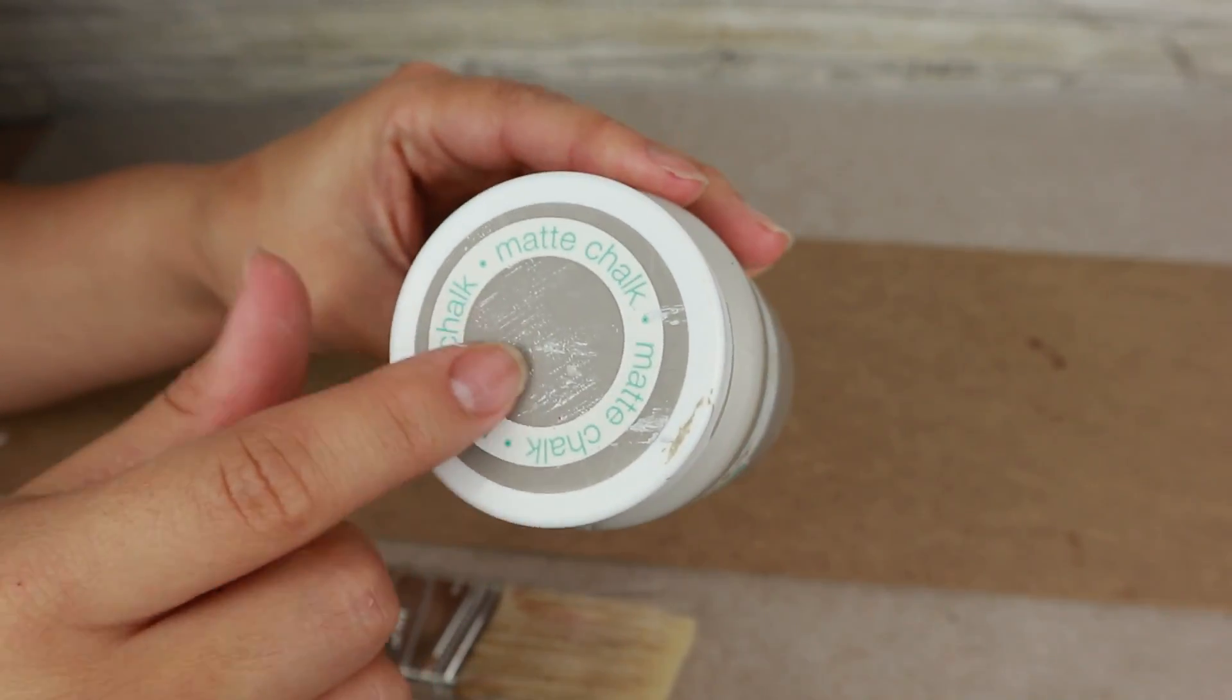Next, I'm going to paint my sign with my DecoArt chalk paint in mineral color. This is one of my favorite colors because it is very neutral and combines with everything. I will be giving it two paint coats on the front and the back side of my sign to cover everything very well and let it dry.